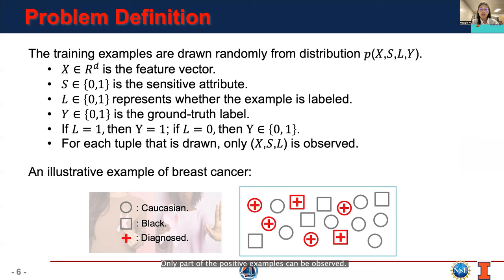Only part of the positive examples can be observed. That is, if L equals 1, then Y must be positive. Otherwise, Y could be either 0 or 1. For each tuple that is drawn, only (X,S,L) is observed.